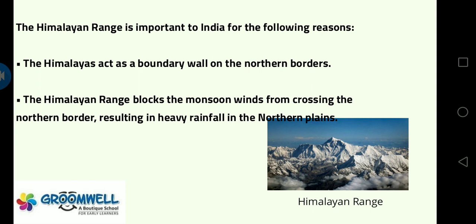The Himalayas act as a boundary wall on the northern borders, acting as a border which separates and protects us from other countries. The Himalayan range also blocks the monsoon winds from crossing the northern border, resulting in heavy rainfall in the northern plains — preventing floods, landslides and other disasters. So the Himalayas protect us from monsoon winds crossing the northern border.